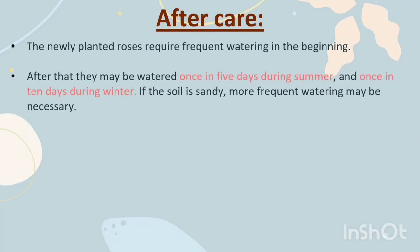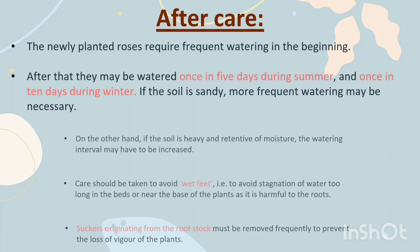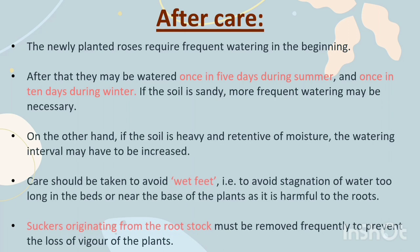After Care. The newly planted roses require frequent watering at the beginning. After that, they may be watered once in 5 days during summer and once in 10 days during winter. If the soil is sandy, more frequent watering may be necessary. If the soil is heavy and retentive of moisture, the watering interval may have to be increased. Care should be taken to avoid waterlogging or stagnation of water near the base of the plant, as it is harmful to the roots. Suckers originating from the rootstock must be removed frequently to prevent loss of vigour.